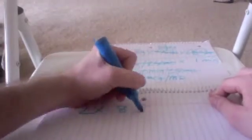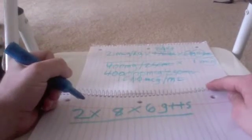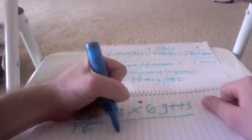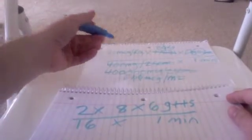So now let's rewrite this in its simplified form. Okay, 2 times 8 times 6 drops over 16 times 1 minute. Awesome, right. Okay. So we can see what we have here and what it became down here.